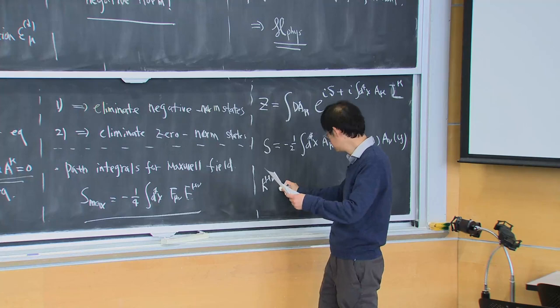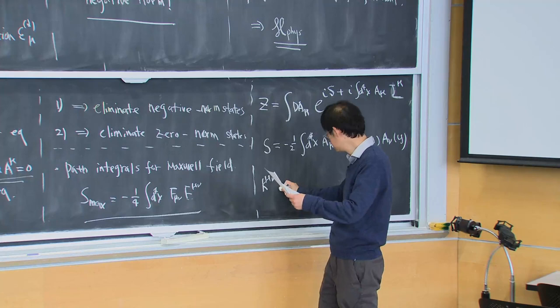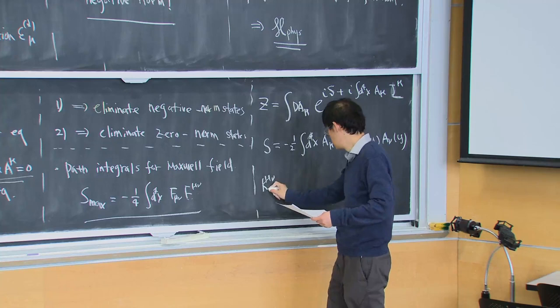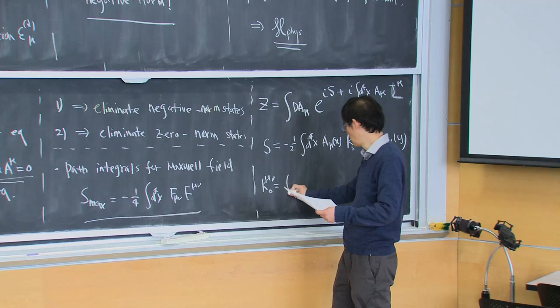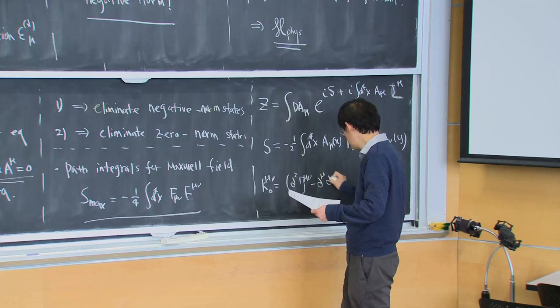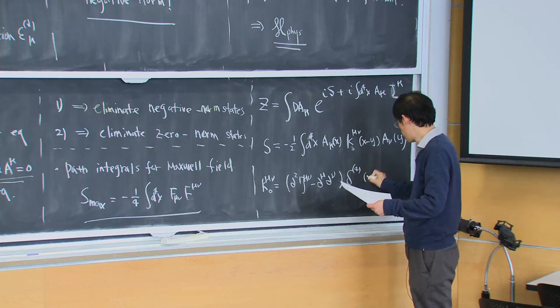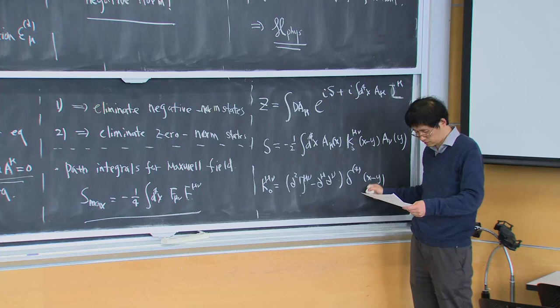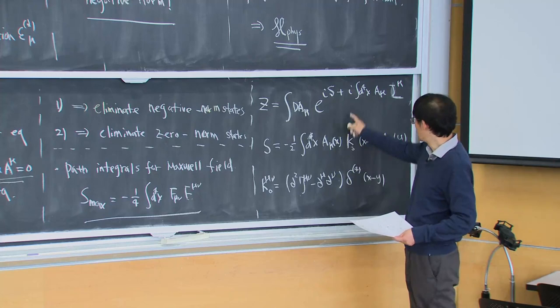The kernel K^(0)_mu_nu is given by: partial^2 eta_mu_nu minus partial_mu partial_nu, times a delta function. In principle, this is just a Gaussian integral, so we can directly write down the answer for Z[J] as some constant times the exponential of i times the double integral of J_mu(x) [K^(0)]^{-1}_mu_nu(x-y) J_nu(y).